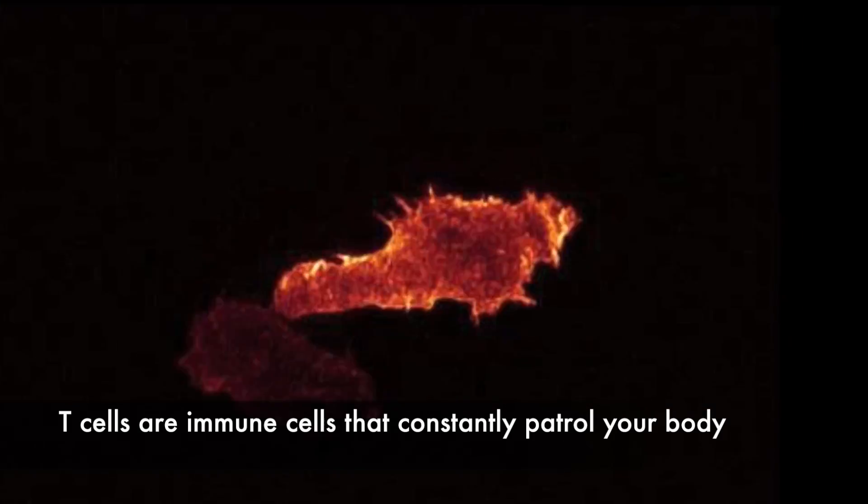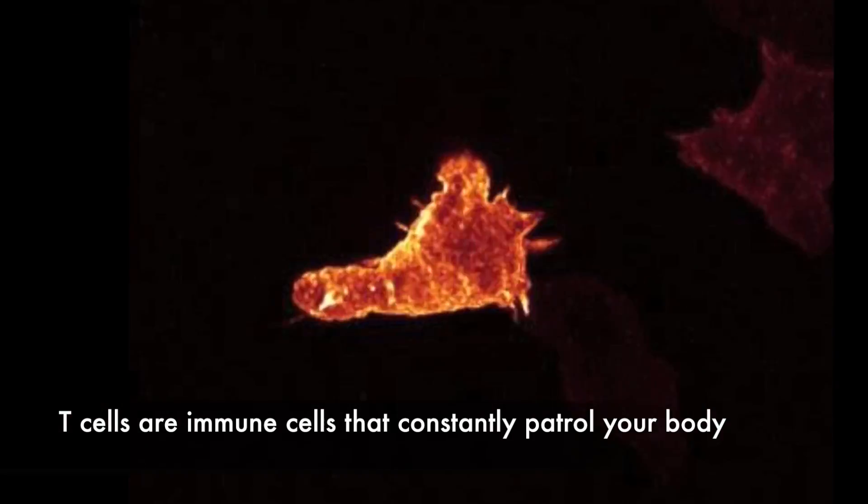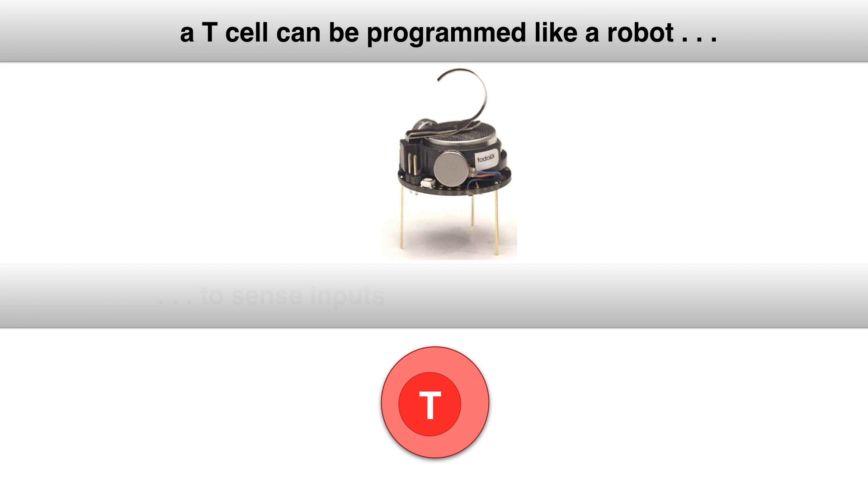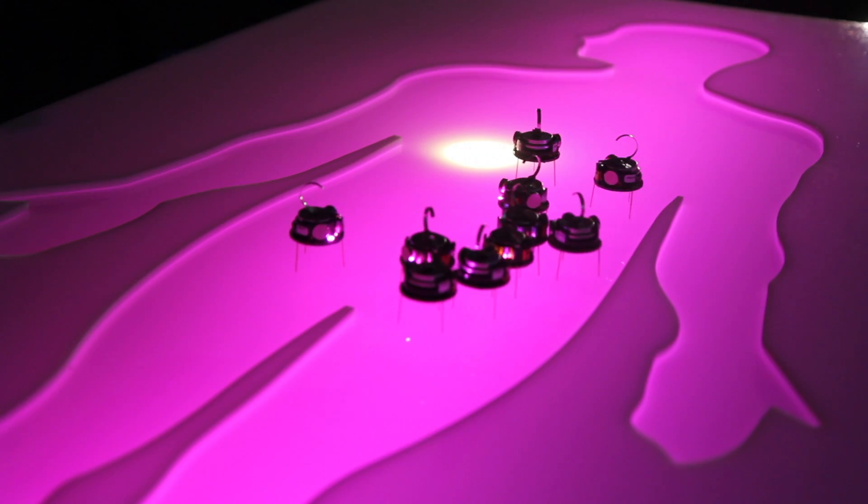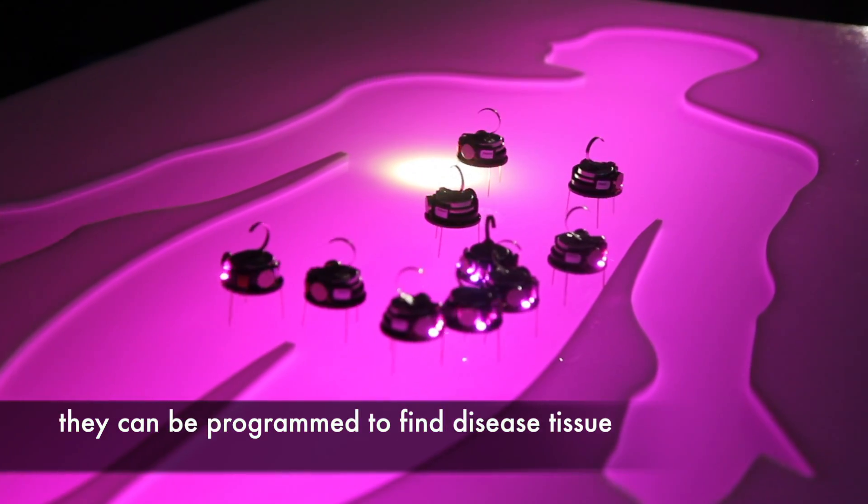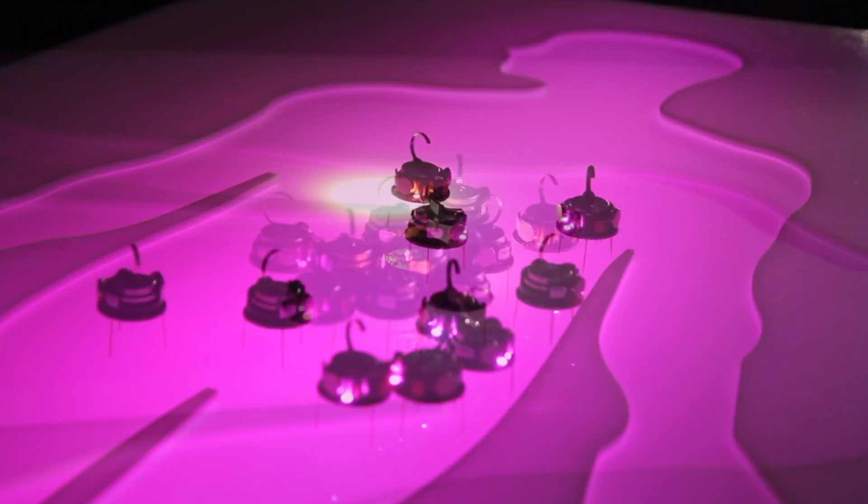A T-cell is a type of immune cell that constantly patrols your body. We have learned to program T-cells as if they were microscopic robots to sense inputs and respond. They can be programmed to find disease tissue.